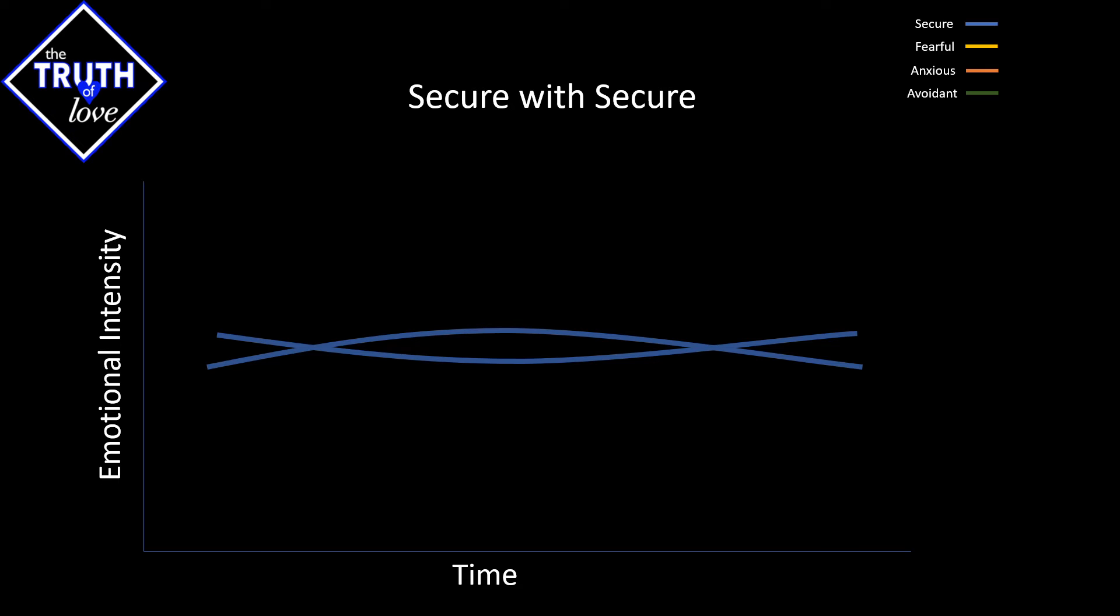If you happen to find two individuals that are secure, they have a good grounding, a good foundation on what they interpret their value system to be. It's not to say that these individuals are going to stick together for life, but these individuals have a good and healthy understanding of their limitations and the limitations of their partner.